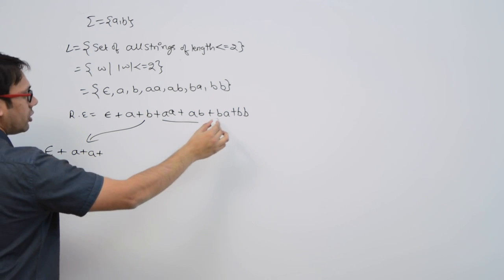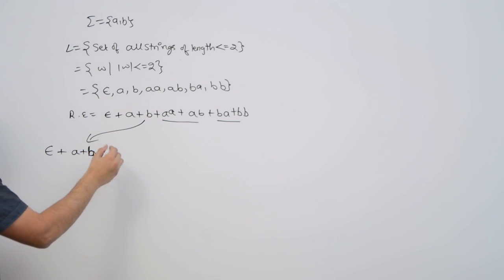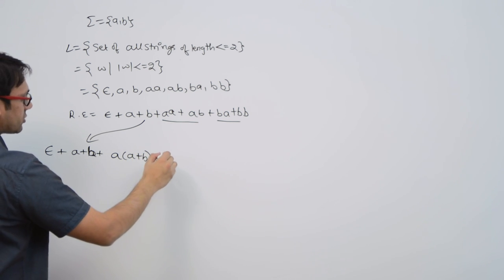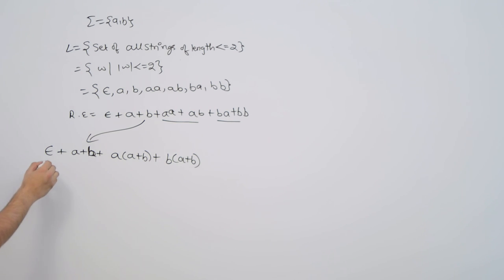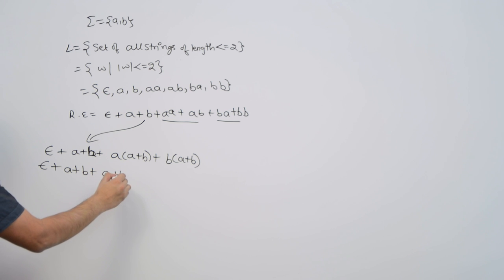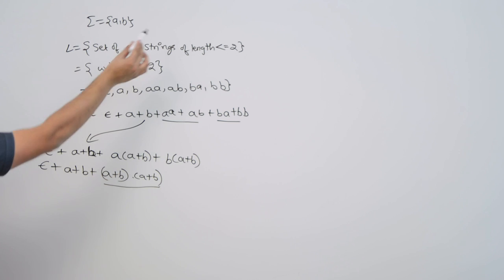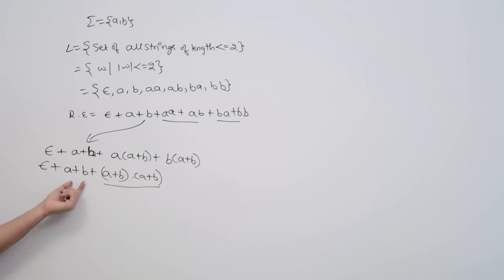From aa and ab, you can take a as common; from ba and bb, you can take b as common. So it will be: epsilon + a + b + (a + b)(a + b). As you can see, (a + b)(a + b) represents strings of length 2, a and b represent strings of length 1, and epsilon represents strings of length 0. So we have still taken the union of all strings.